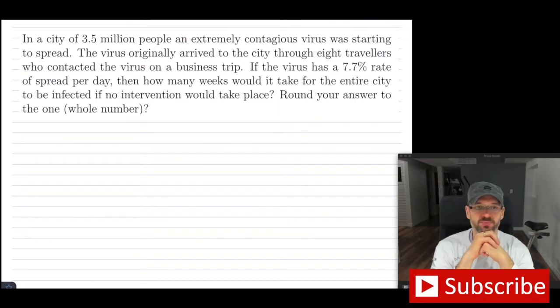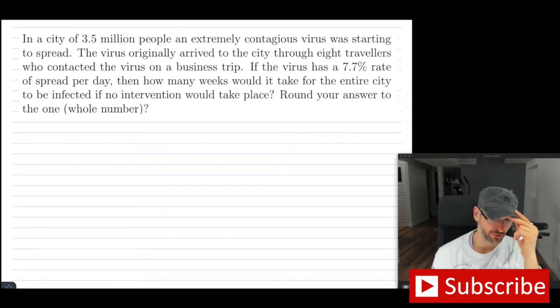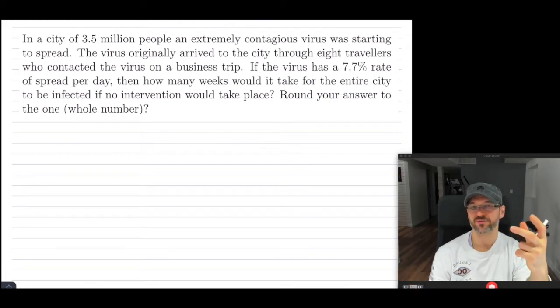So the virus originally arrived to the city through eight travelers who contacted the virus on a business trip. If the virus has a 7.7% rate of spread per day, so basically that means it is growing at 7.7% every single day, so more and more people are going to be contracting it, then how many weeks would it take for the entire city to be infected if no intervention would take place? So if nothing takes place, how long would it take? So this is a great example to walk yourself through. So one of the first things that you have to be able to relate to here is you have to figure out that this is really just an exponential growth problem.